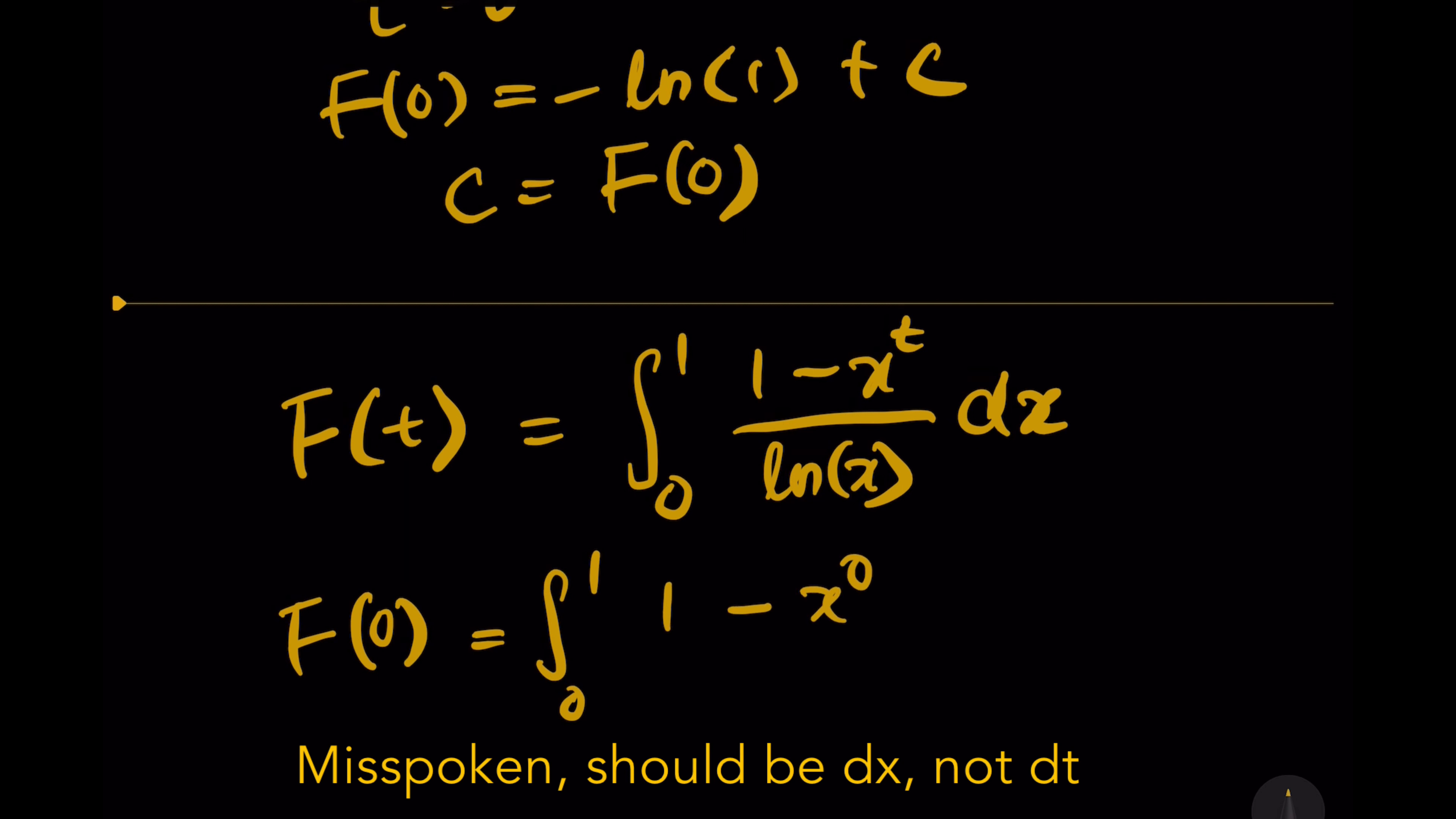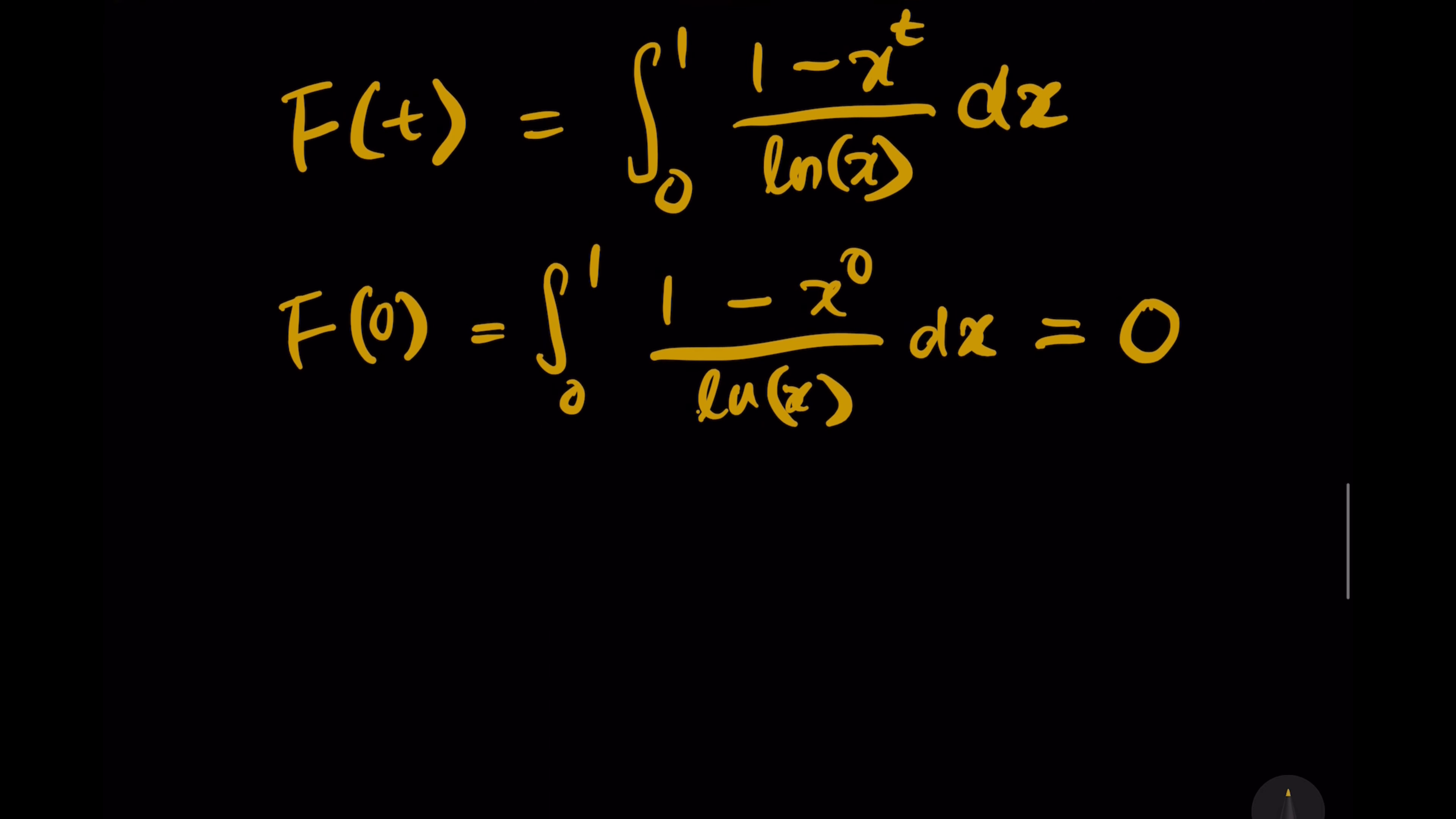x^0 equals 1, so 1 minus 1 equals 0. It's meaningless to integrate over 0, so F(0) simply equals 0, and therefore c equals 0. We just eliminate the constant.